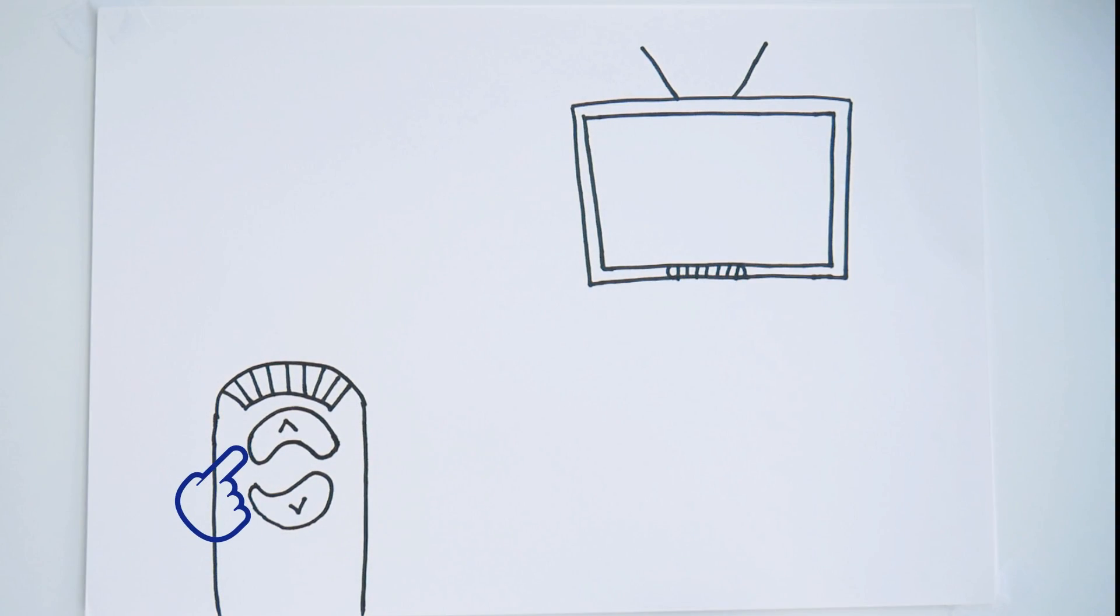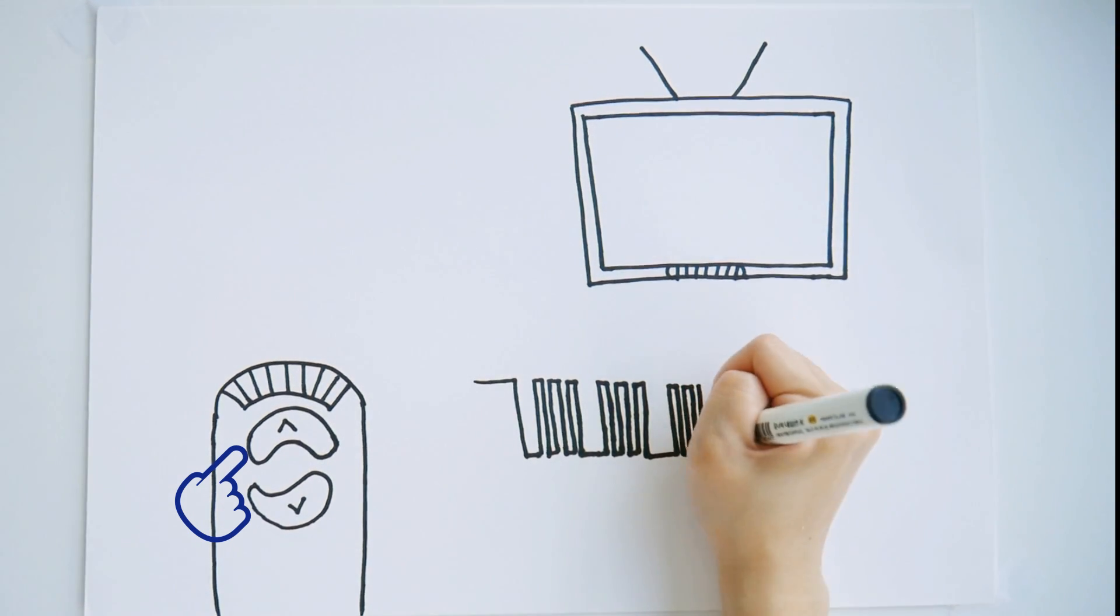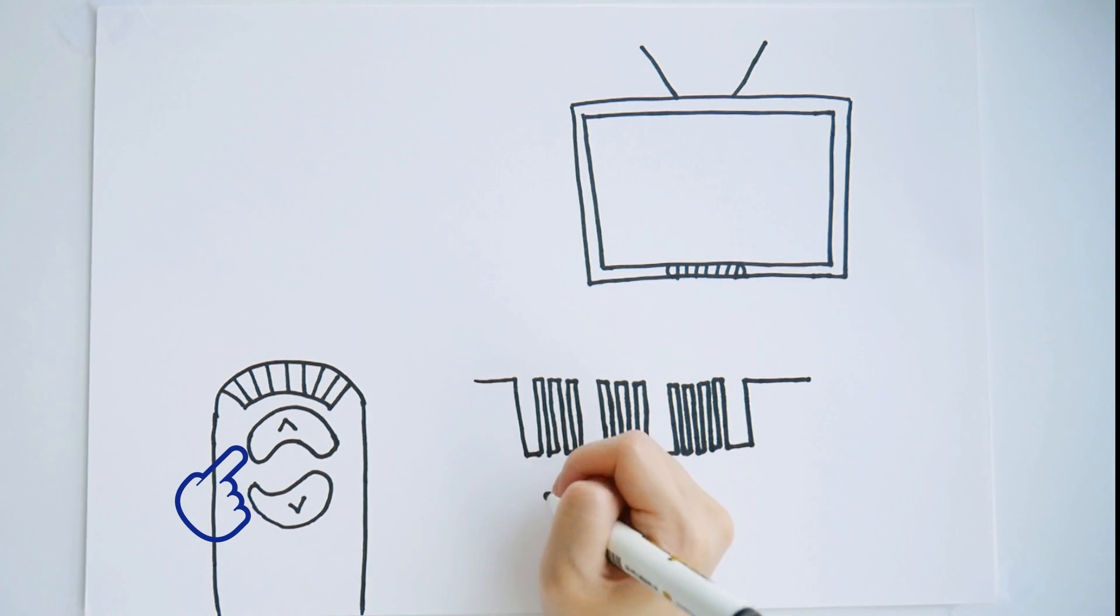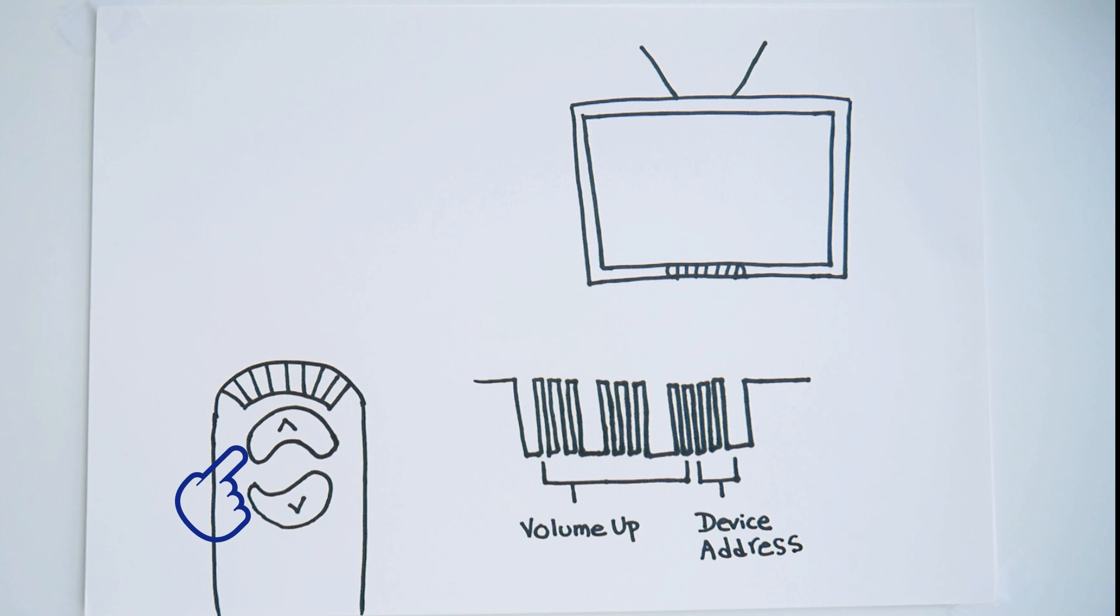Here, I am going to push the volume up button on the remote, causing it to touch the contact beneath and complete the volume up circuit on the circuit board. The integrated circuit detects this. The integrated circuit sends the binary volume up command to the LED at the front of the remote. The LED sends out a series of infrared light pulses that corresponds to the binary volume up command.